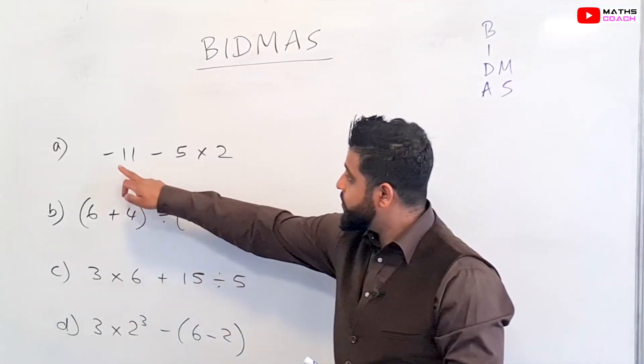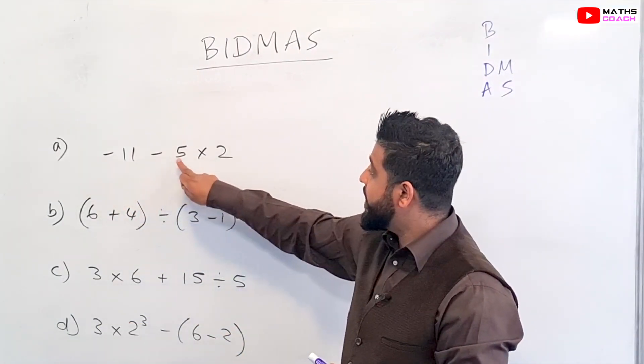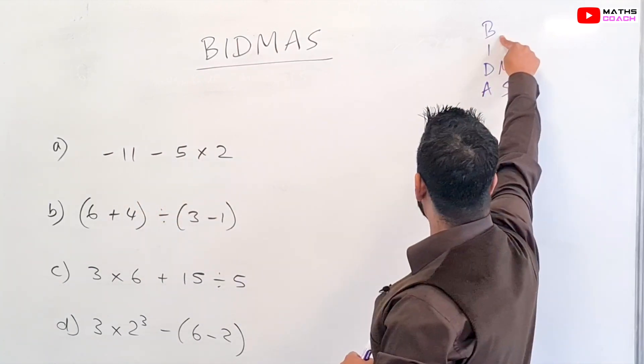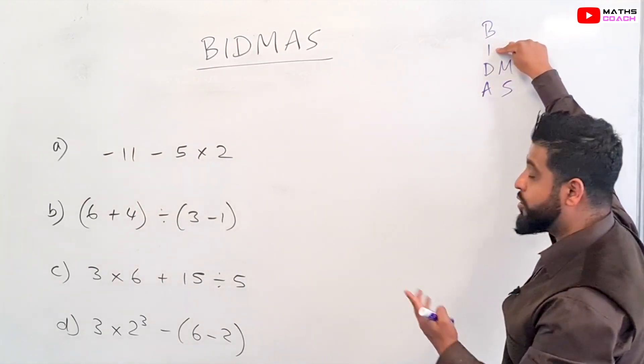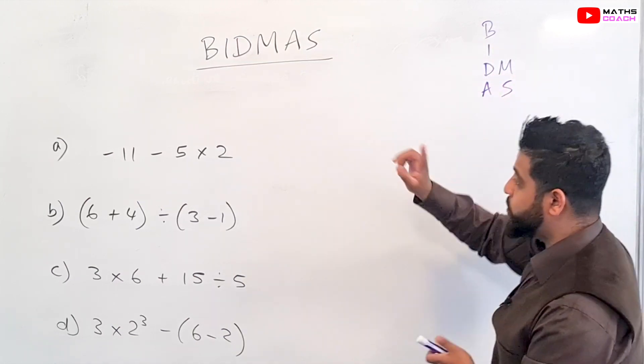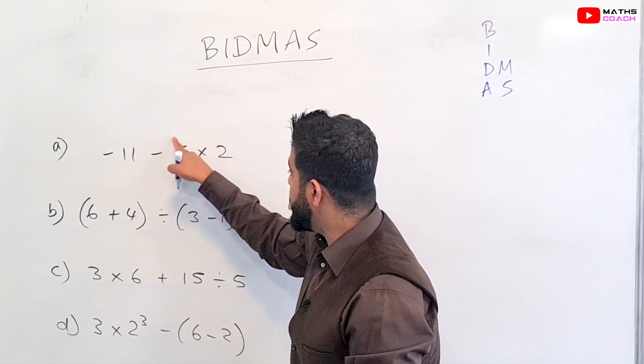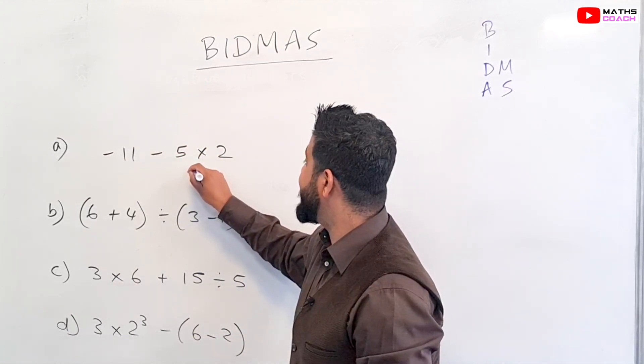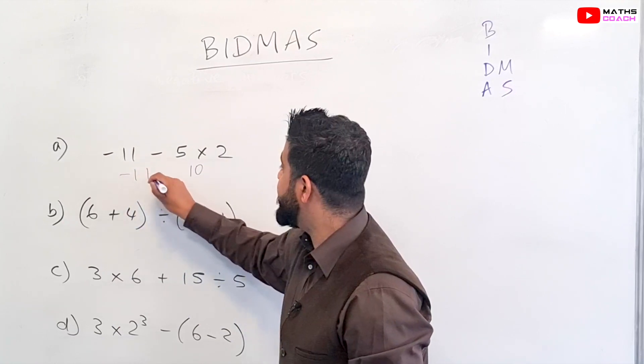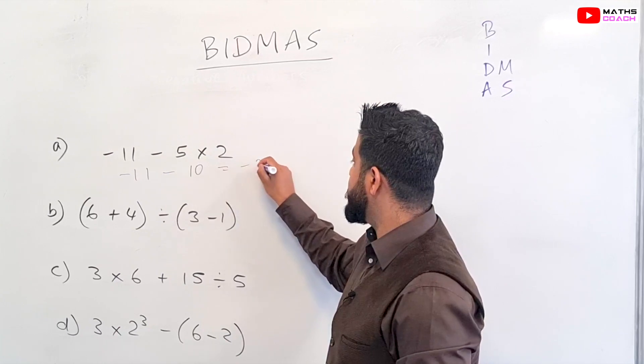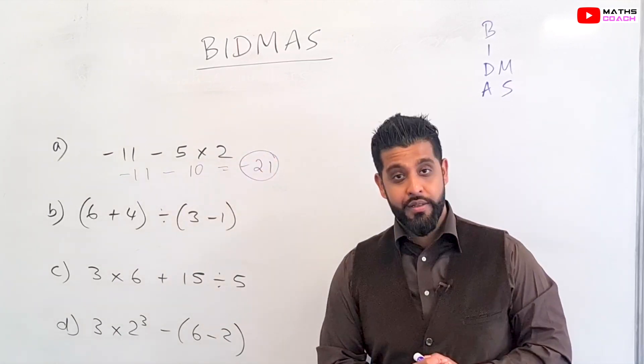So let's start with our first one. We've got -11 - 5 × 2. So we look at our BIDMAS. We don't have any brackets, we don't have any indices or powers. We have a multiplication but no division, so let's work on our multiplication first. We're going to do 5 × 2 first. What's 5 × 2? 5 × 2 is 10. So now we've got -11 - 10 to deal with, and -11 - 10 is simply -21. And that's your answer.